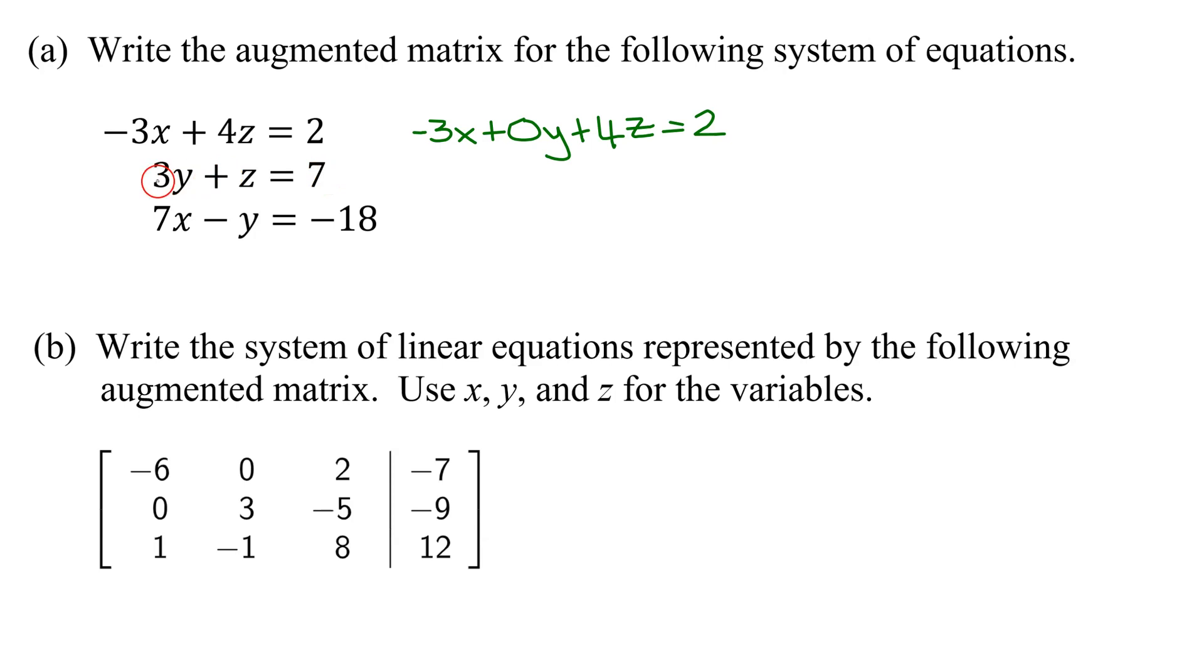Equation 2, you're missing the X term, so it's going to be 0X plus 3Y plus Z. And how many Z's do we have? It's just going to be plus 1Z equals 7.